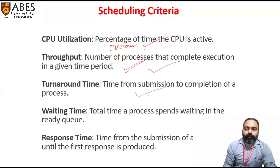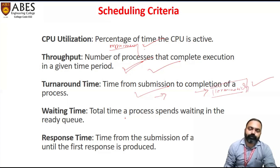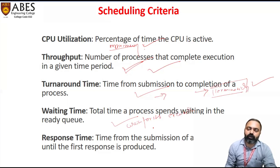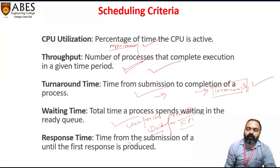Turnaround time is the time from submission to completion of a process — from when a process enters the system to when it terminates after execution; all the time in between is considered turnaround time. Waiting time is the time a process waits for the CPU. Response time is the time from submission of a request until the first response is produced.